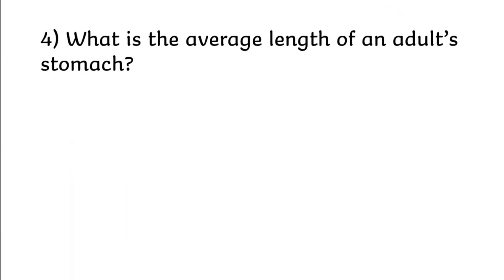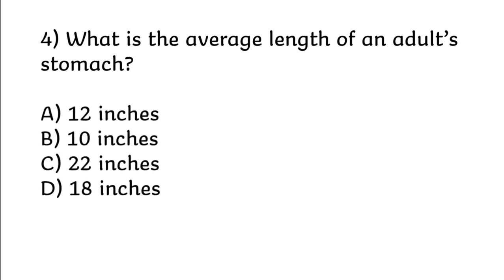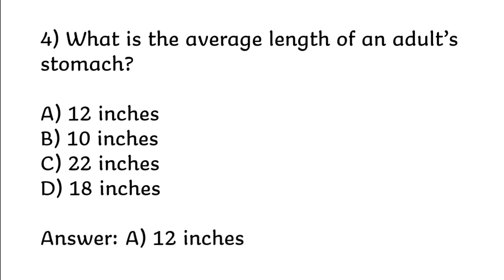What is the average length of an adult's stomach? 12 inches, 10 inches, 22 inches, 18 inches. Correct answer is Option A: 12 inches.